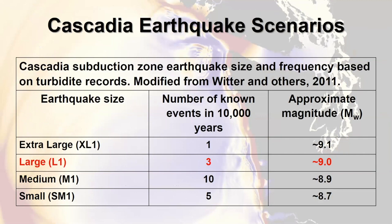In order to do tsunami modeling, we have to figure out what the earthquake looks like. Scientists do this based on our known record of past earthquakes from geologic evidence and offshore turbidite evidence. A key paper by Rob Witter and others in 2011 looks at the number of known earthquakes in the past 10,000 years and about how big they were, categorized by T-shirt sizes: small, medium, large, and extra large. Even the small earthquake is a magnitude 8.7. For Washington State, we use the large earthquake, the L1 event — a magnitude 9.0 earthquake that ruptures the entire length of the Cascadia subduction zone.